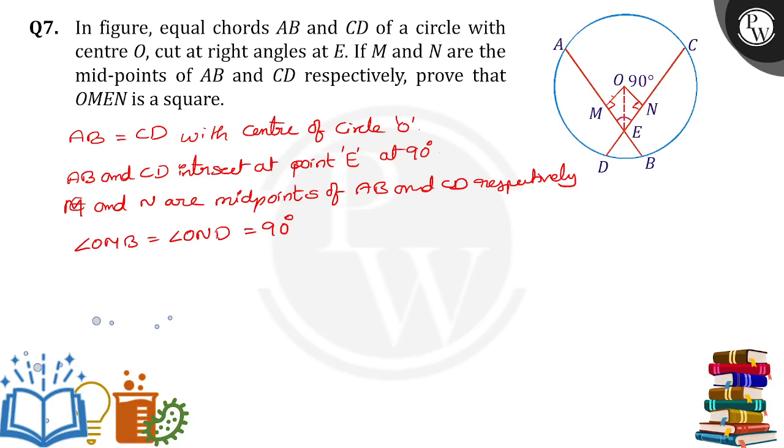Next, angle OME is equal to angle ONE. From this only we got it. Take it as equal to 1. Now OM, E is equal to ON since they are equidistant from center of the circle.